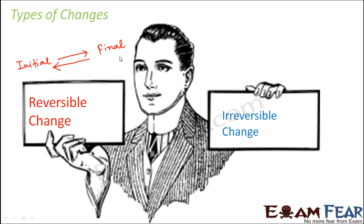For example, let's say you got a haircut. The initial state was long hair; after the haircut, you have short hair — that is the final state. When I say a change is reversible, that means the short hair can be reversed back to long hair. So that would be an example of reversible change.